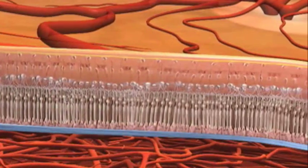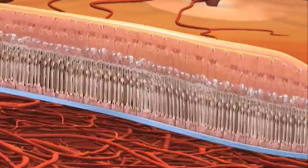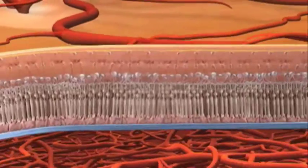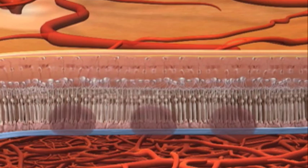In photocoagulation, light is converted into heat as it is absorbed by the melanin and hemoglobin in retina pigment epithelium, or RPE.